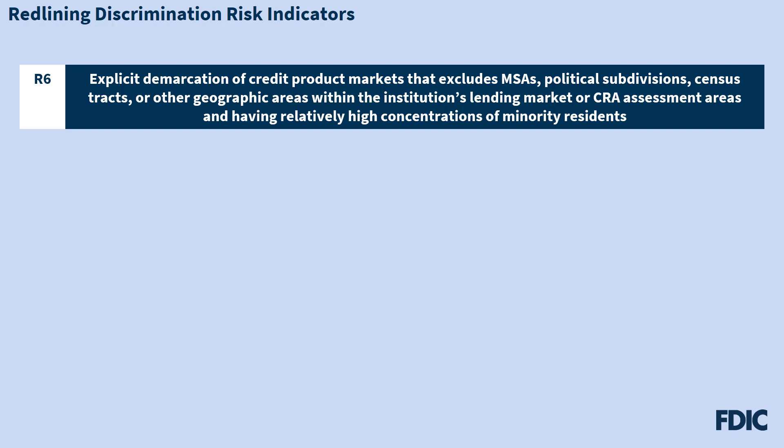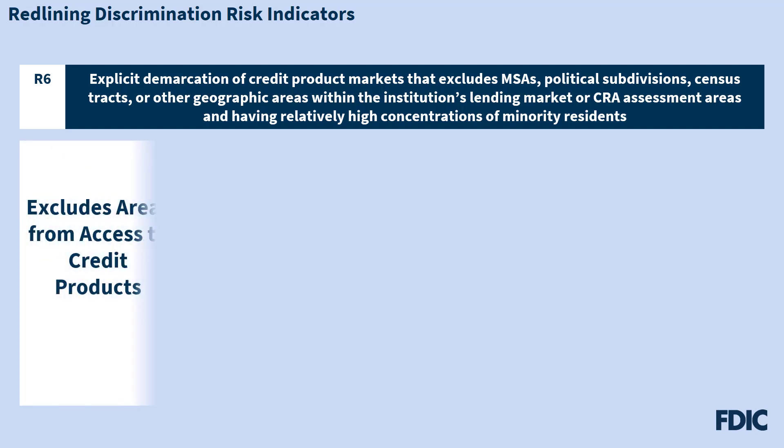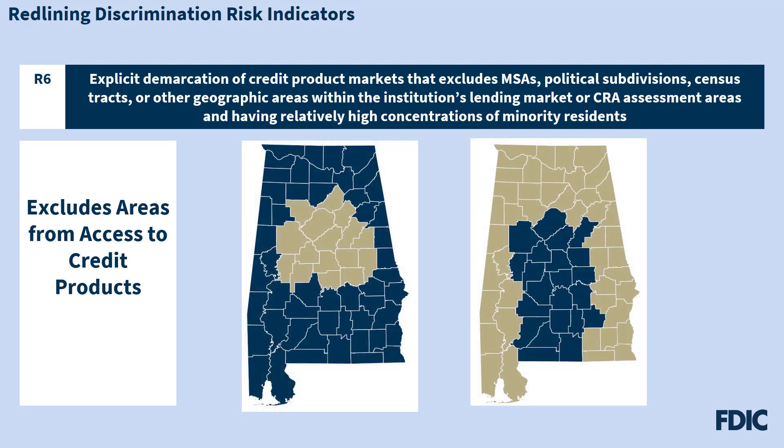The next risk indicator, R6, relates to explicit demarcation of credit product markets that excludes MSAs, political subdivisions, census tracts, or other geographic areas within the institution's lending market or CRA assessment areas having relatively high concentrations of minority residents. This risk indicator focuses on whether a bank directly excludes particular areas from access to particular credit products. For example, examiners would note redlining risk if a bank's stated market area is shaped like a donut or horseshoe that excludes areas where the majority of people are minorities.